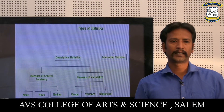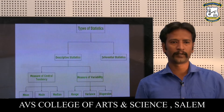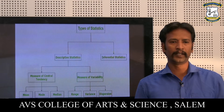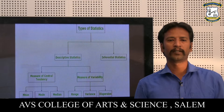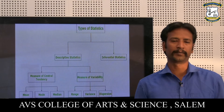In descriptive statistics, there are different categories. The first one is measures of central tendency — that is mean, median, and mode. The second one is measures of variability — that is range, variance, and dispersion.